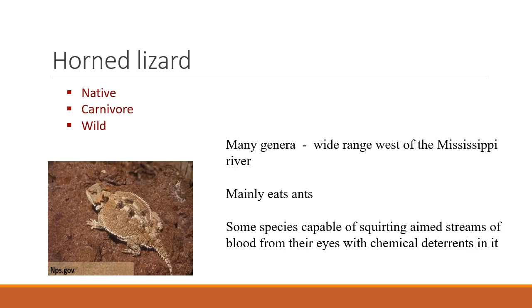If you've worked out on rangelands, you may have come across horned lizards. They're very interesting critters, with quite a few varieties from the Mississippi River westward. They eat mostly ants. They're interesting because they can really flatten down if you pick them up, and some are even able to squirt blood out of their eyes as a chemical deterrent.